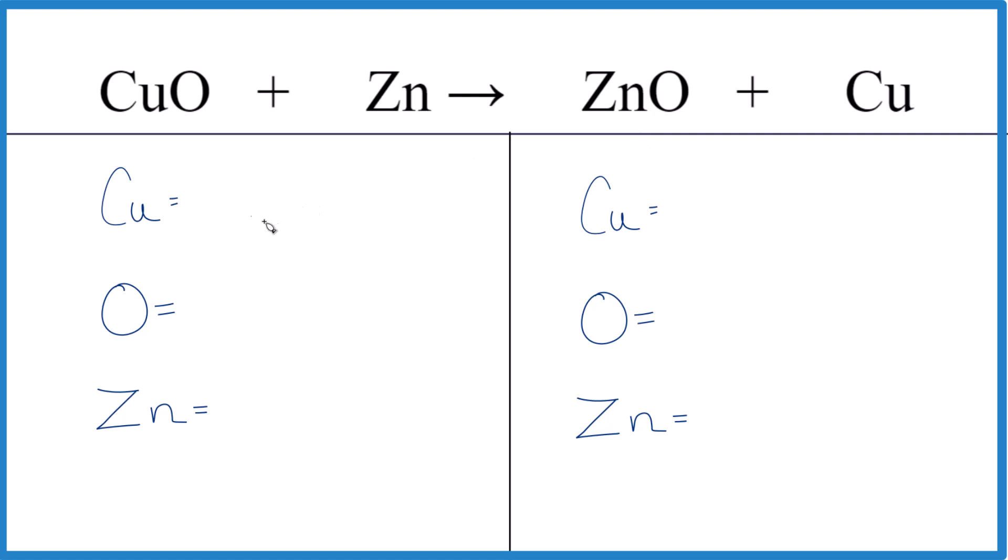Let's just count the atoms up, and when I do that, I find that it's already balanced. So it's pretty simple there. We have one copper, one oxygen, and one zinc on both sides. This equation is balanced.